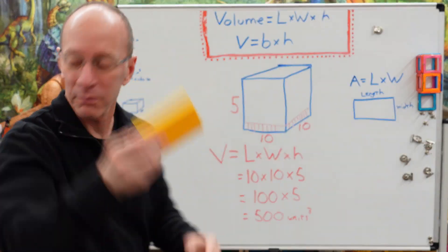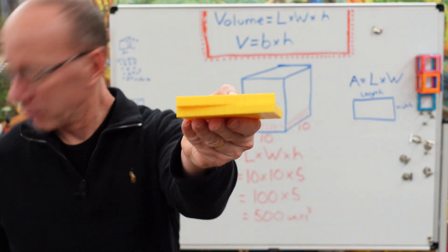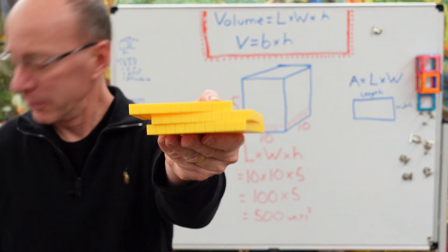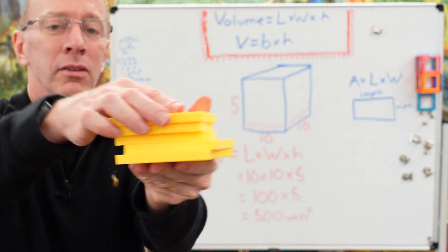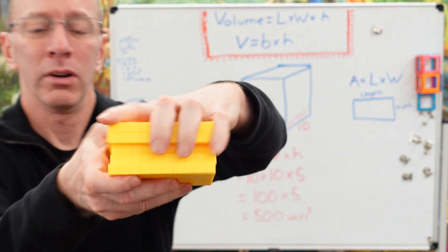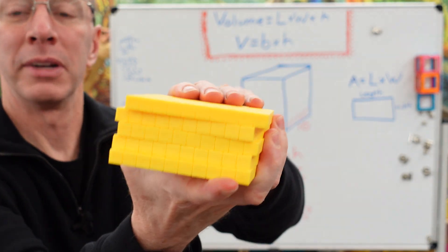Look at the height. I have five of these. So I have one, two, three, four, five.